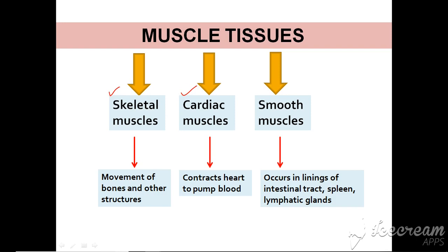Each type of muscle tissue has a specific function and unique structure. Skeletal muscles help in the movement of bones and other structures of the body. Cardiac muscles help in the contraction of the heart to pump blood. Smooth muscles occur in the linings of the intestinal tract, lymphatic glands, and spleen. So meat means the skeletal muscle tissues containing more or less adhering fat. Meat also includes glands and organs like tongue, liver, heart, kidney, and brain.